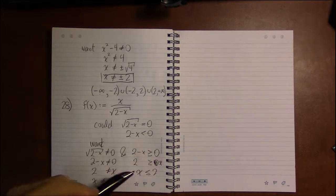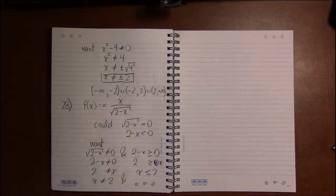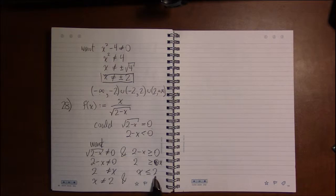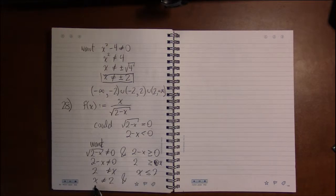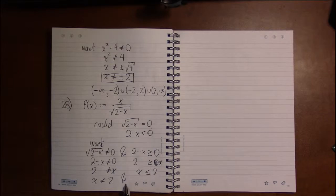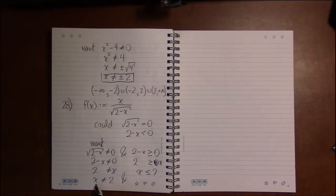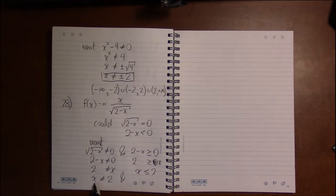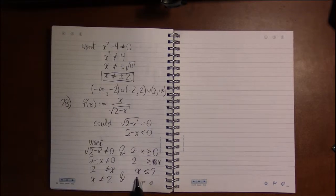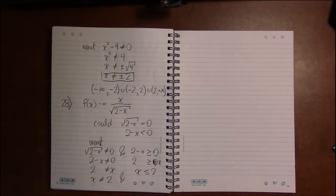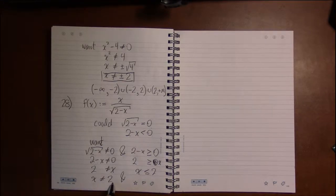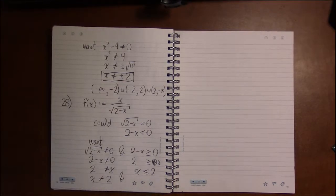Well wait a minute here. I'm saying here this says x can be 2, but this is saying x can't be 2. Well this is where the AND comes in. If this says x can't be 2, then it can't be 2. I don't care what all the other conditions say. If one of them says x can't be 2, x can't be 2 in any of them.